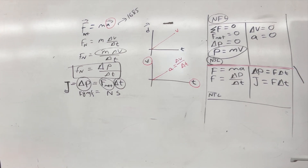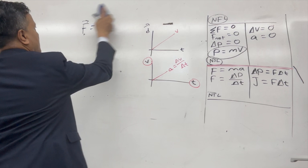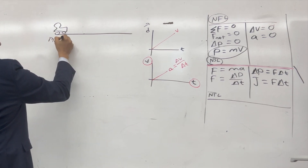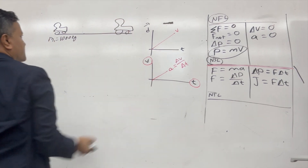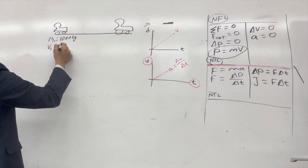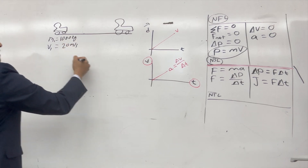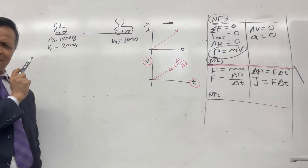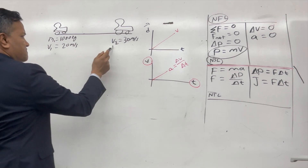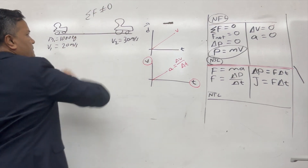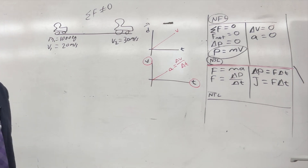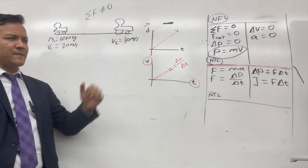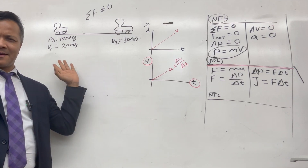Now let's see an example of impulse using the same car. Mass of the car is 1,000 kilograms — mass never changes. This time, velocity at A is 20 meters per second and velocity at B is 30 meters per second. This is an example of Newton's Second Law, not Newton's First Law, because the velocity changed. Net force is not zero, so there was an acceleration involved. That acceleration causes the change in velocity, and the net force causes the acceleration.